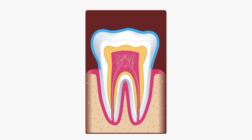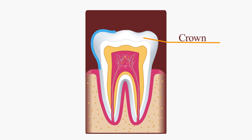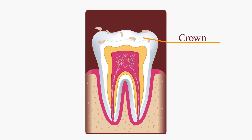The upper part of the tooth above the gums is called the crown. This part is exposed to all kinds of food particles and also encounters microbes. It needs to be well protected, and hence it is coated with an extremely hard covering named enamel.